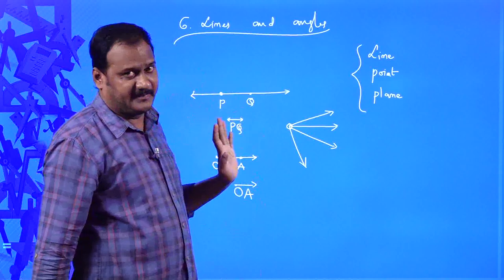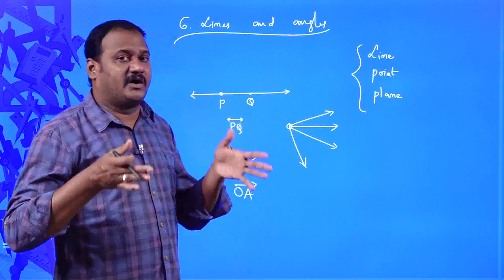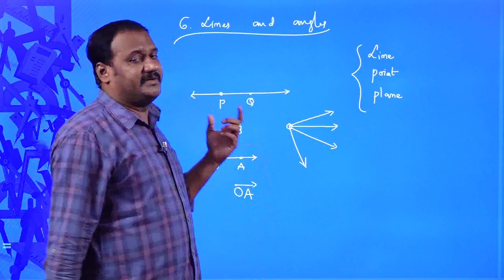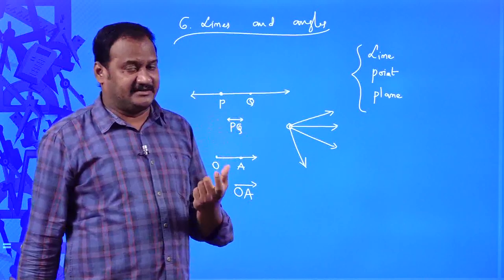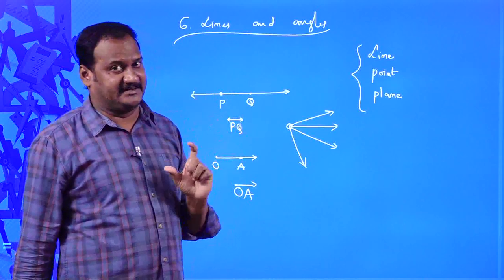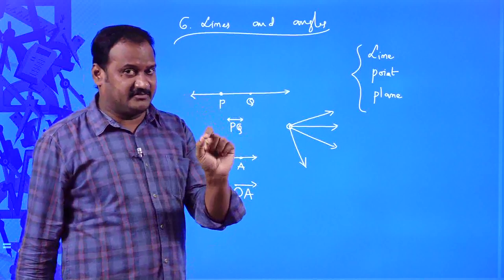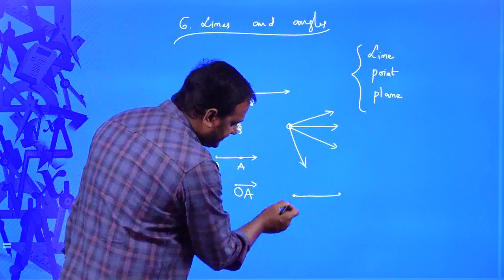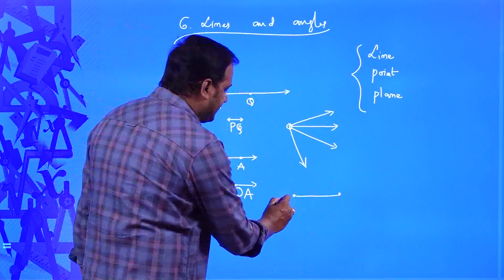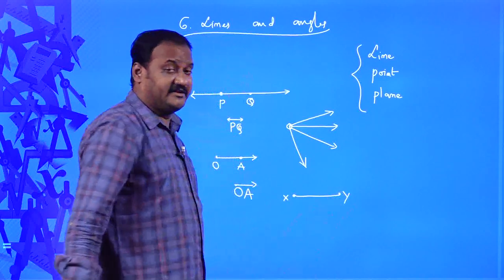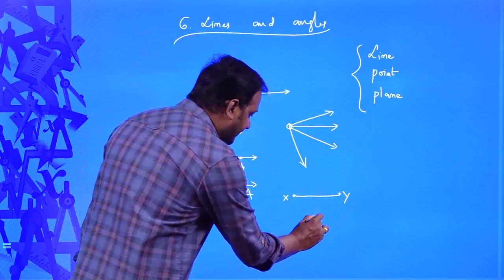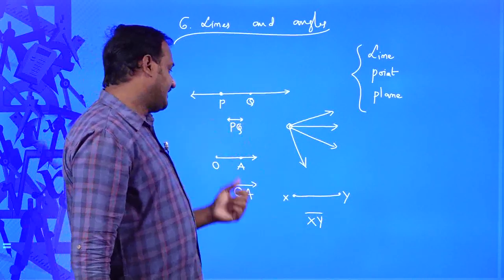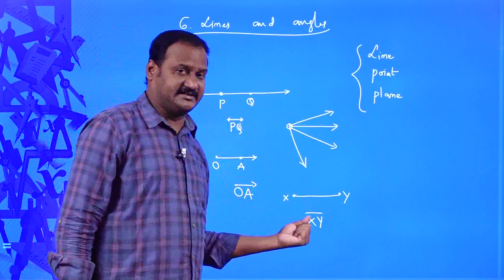If we take one initial point as well as one terminal point on a line, that is called a line segment — a segment of the line which has both a starting point and an ending point. For example, if the starting point is X and the ending point is Y, we write it as line segment XY. So there are three different notations: for a line, a ray, and a line segment.